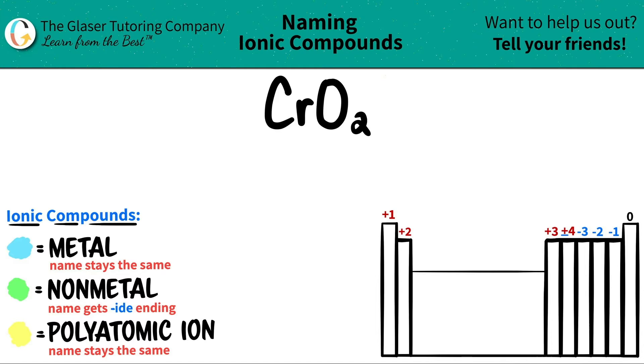Today, we are going to be naming the ionic compound CrO2. So there's only two elements here. Let's just map them on the periodic table.